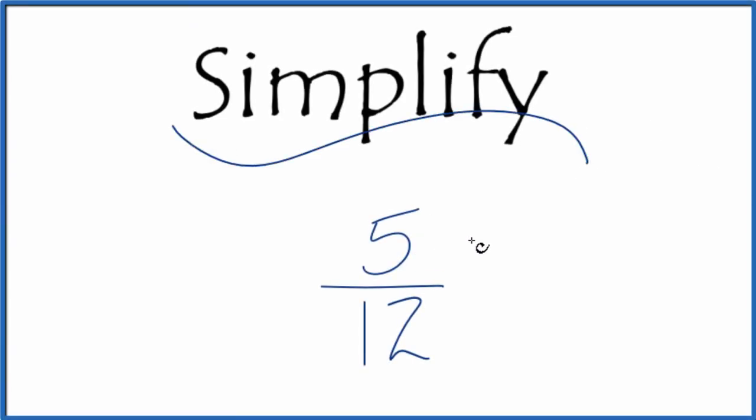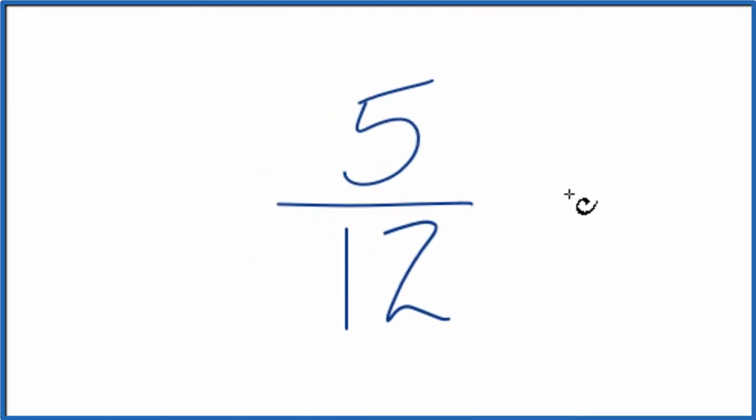Let's take a look at how we might simplify 5 twelfths. So what we're trying to do, we're trying to come up with another fraction that's the same. It's equal or equivalent, has the same value, but it's in lowest terms.